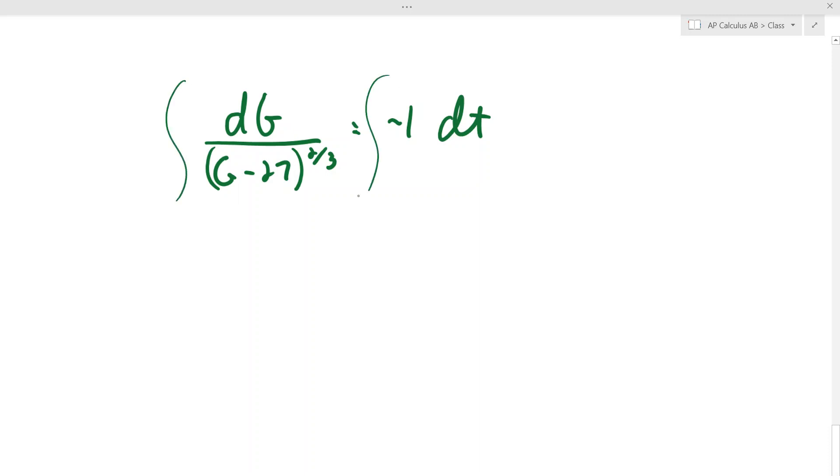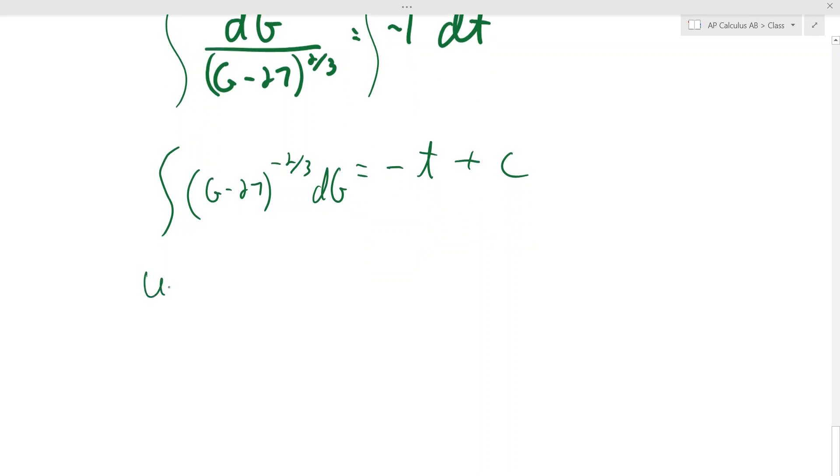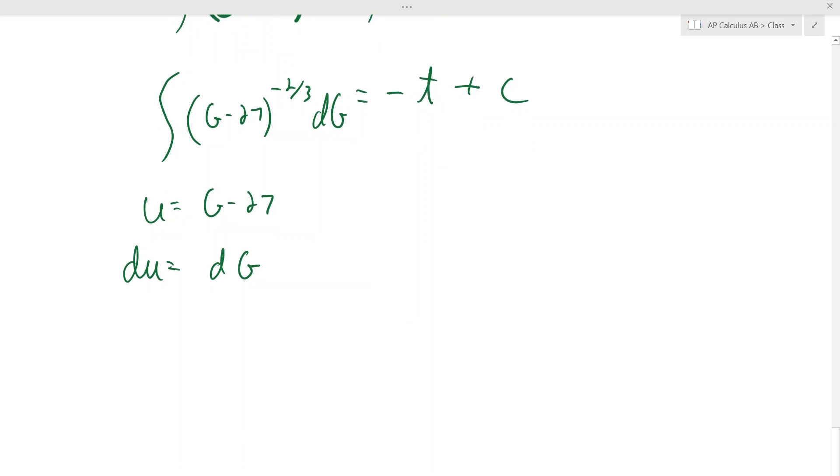So we've separated out the variables. Now you just integrate both sides. That's all I need to do. The integral of the right hand side is super easy. That's just negative t plus C. Over here though, you got to remember this is really (G minus 27) to the negative two thirds dG. And you can do a u substitution there if you wanted to, because there is an inside function like u would be G minus 27, which means du is just dG.